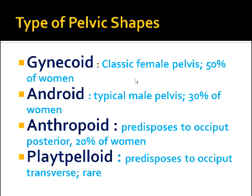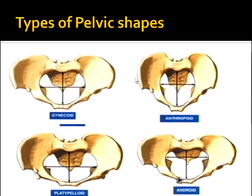Android is the typical male pelvis and 30 percent of women have android pelvis. Anthropoid pelvis predisposes to occiput posterior — normally the occiput should be placed left anterior or right anterior, but this type predisposes to occiput posterior. Twenty percent of women have this pelvis. Platypeloid pelvis predisposes to occiput transverse and is a rare type.